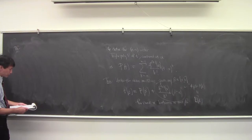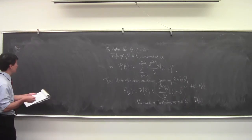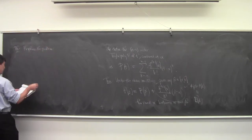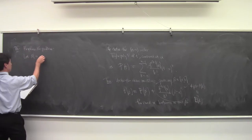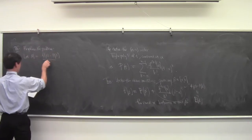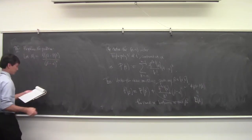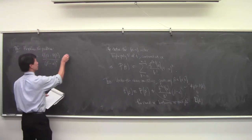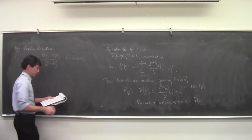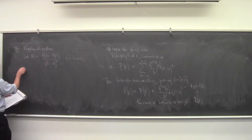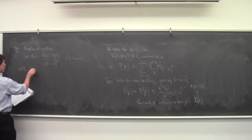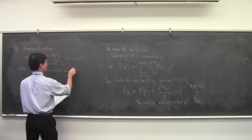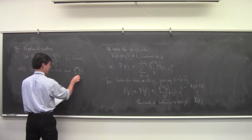We're going to rephrase the problem. Let M denote [f(beta) − P(beta)] / (beta − alpha)^n. This is just some constant. What we want to show is that there exists an x between alpha and beta where f^(n)(x) / n! equals M.